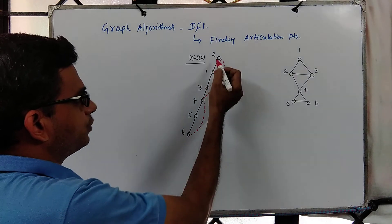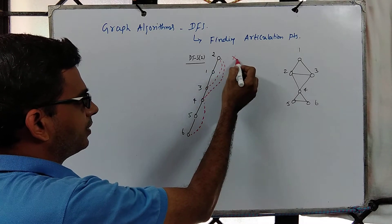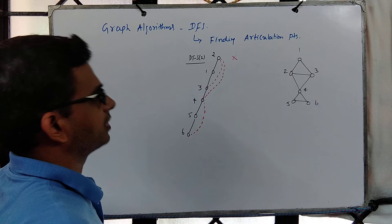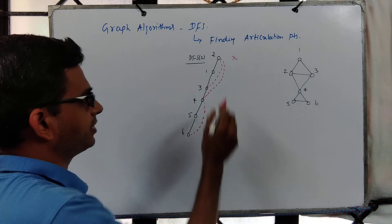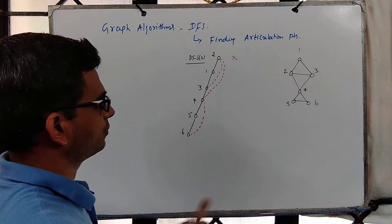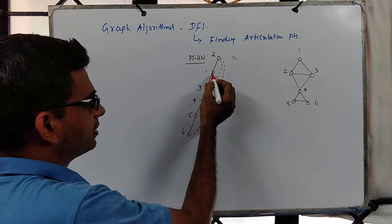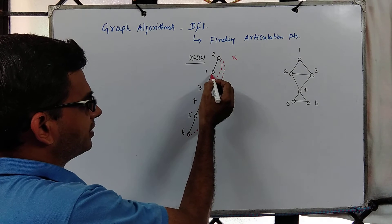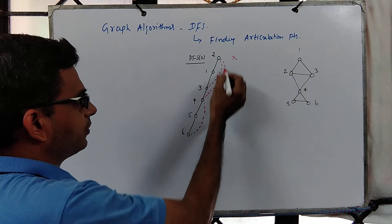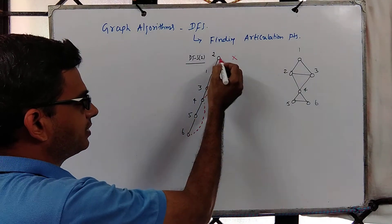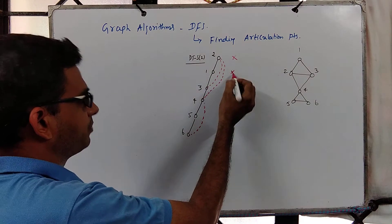Now, is 2 an articulation point? No — the degree of the root must be at least 2 for it to be an articulation point. In this case it is only 1, so it is not. Vertex 1 is not an articulation point either, because there is a descendant connected to some ancestor, so this is not an articulation point.